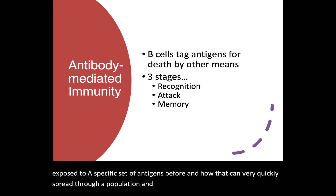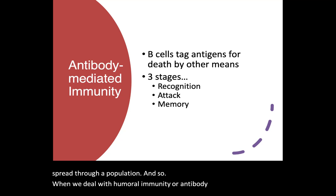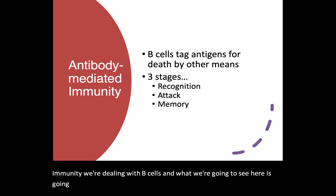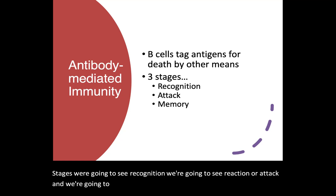When we deal with humoral immunity, or antibody-mediated immunity, we're dealing with B cells. We're going to see the same three stages: recognition, reaction or attack, and remembrance or memory, as we did with the T cells. But it's going to look slightly different.